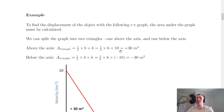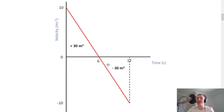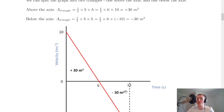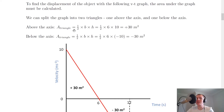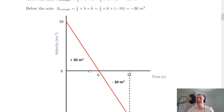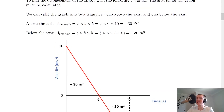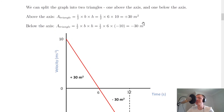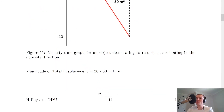Here's a worked example: find the displacement of the object with the given VT graph. We split the graph into two triangles — one above the axis and one below. Above the axis: area = ½ × 6 × 10 = 30 m (positive). Below the axis: area = ½ × 6 × (−10) = −30 m (negative). Adding them together: 30 + (−30) = 0 meters total displacement. Since it's a magnitude, no direction is needed.